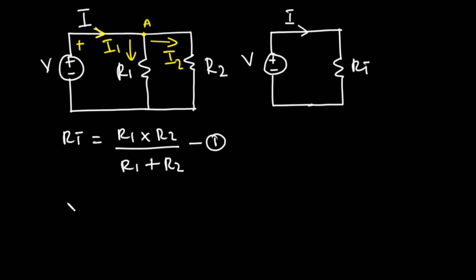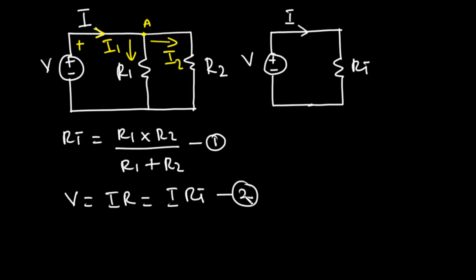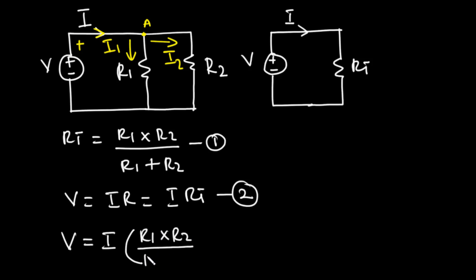According to Ohm's law, V = IR, and in our case V = I × RT — let's call this equation two. Now substituting RT into equation two, we get V = I × (R1 × R2) / (R1 + R2). Let's call this equation three.